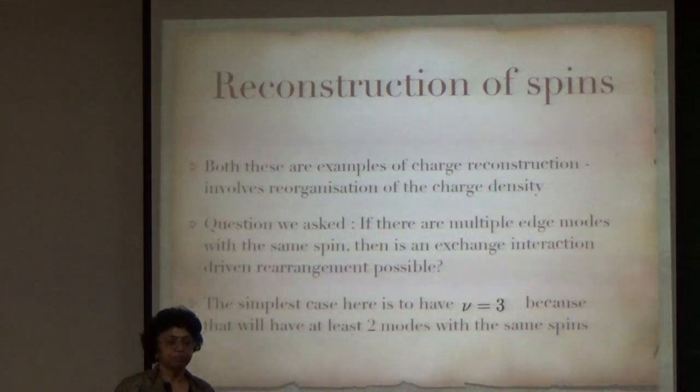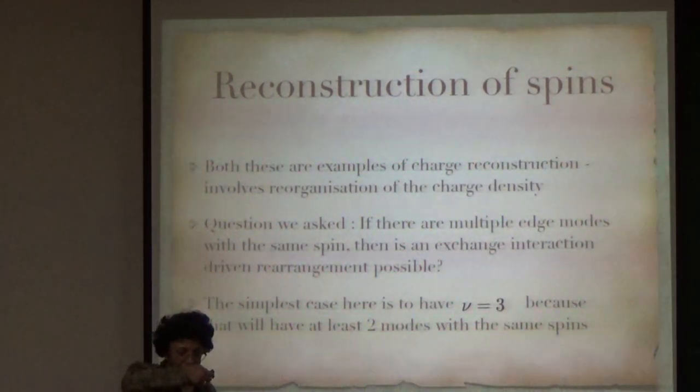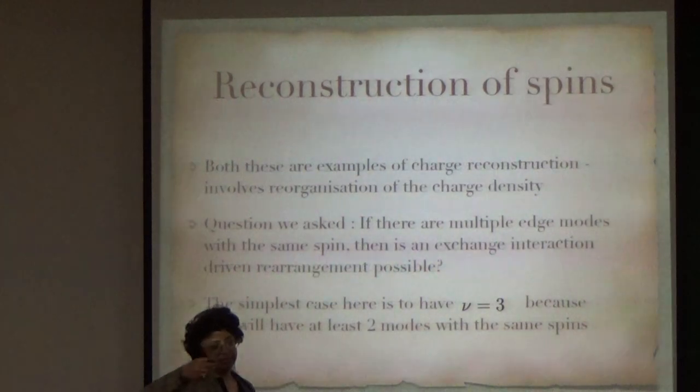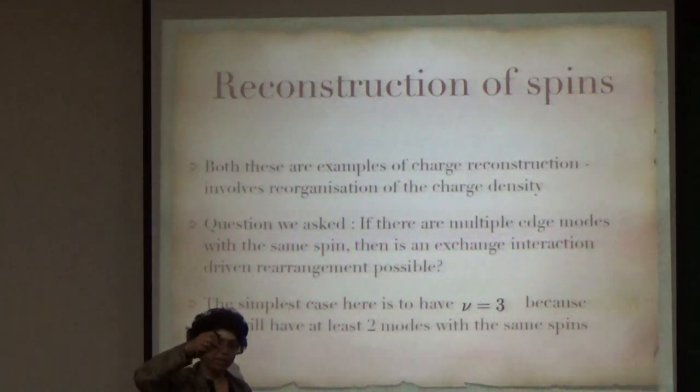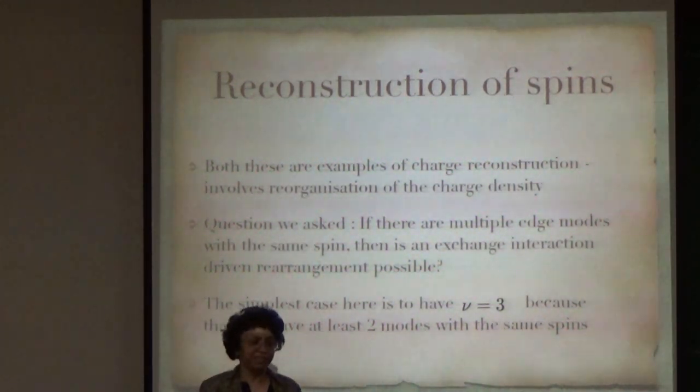Excuse me. What is the experimental signature when you see? I think in the place where they do these kinds of experiments is in Heiblum's experiments in Weizmann. And they have a way of actually contacting individual edges. I mean, I don't know how it's done. And they say that they can contact individual edges and see how much current is carried by them. They've done this, I think, for integer quantum Hall effect as well as fractional quantum Hall effect.